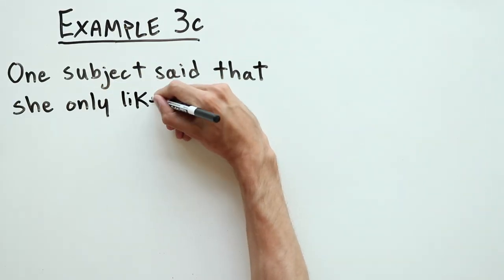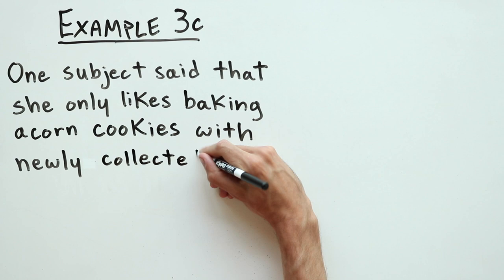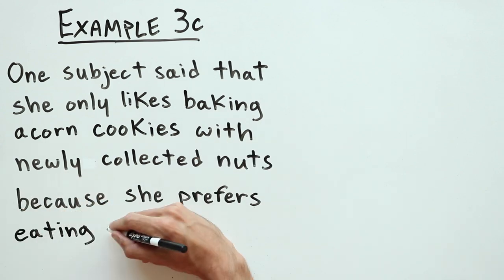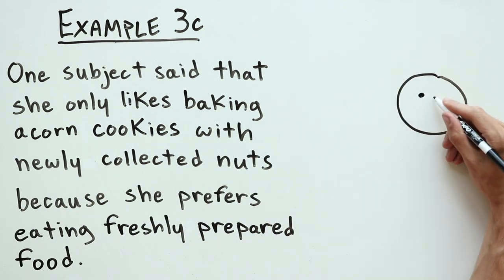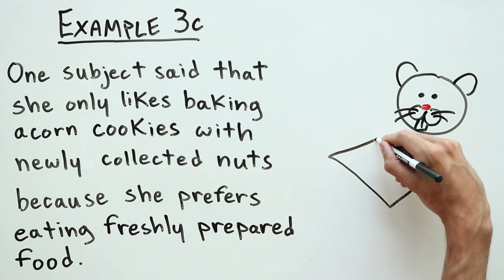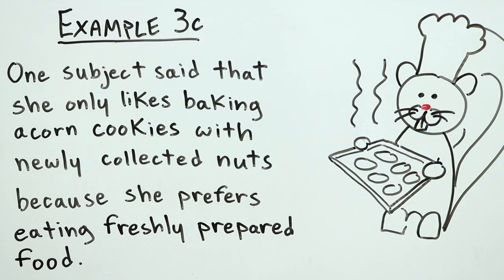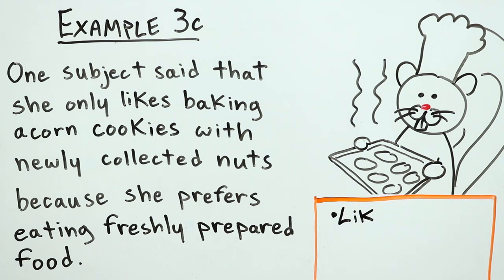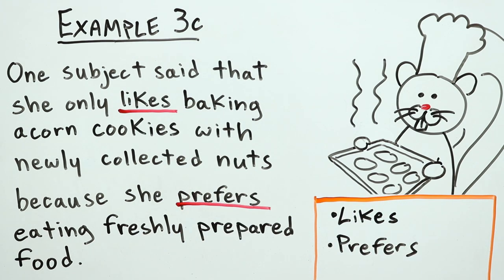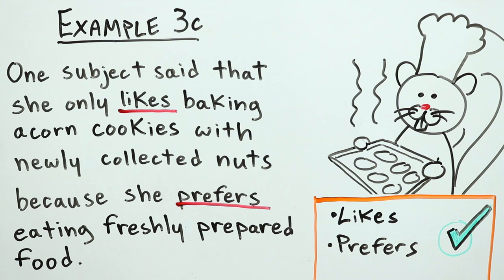In this example, she wrote, One subject said she only likes baking acorn cookies with newly collected nuts because she prefers eating freshly prepared food. What do you think? Is this in parallel form? Listen to the linked words and list them in a column if you need to. Yes, that sounds and looks right. Notice how the tense and word endings look and sound similar, even though a subordinating conjunction appears in this one.